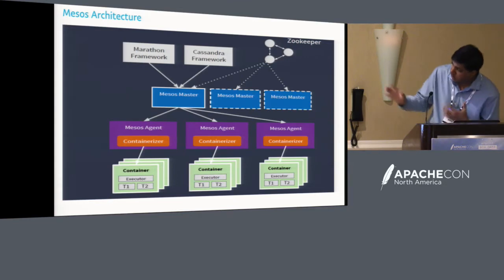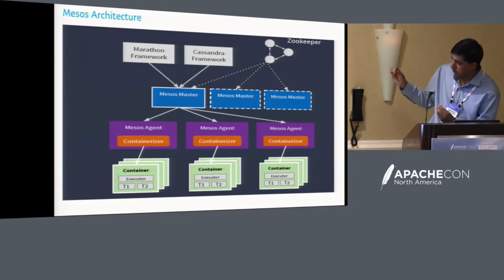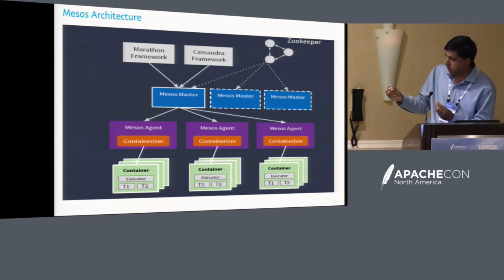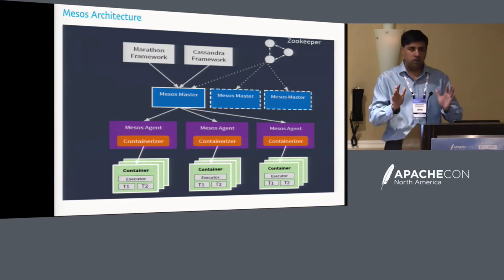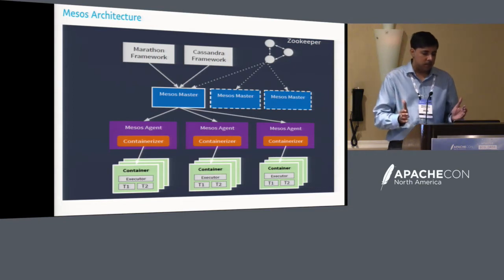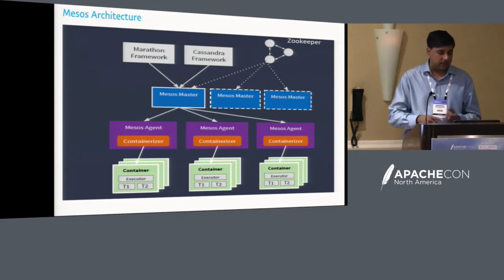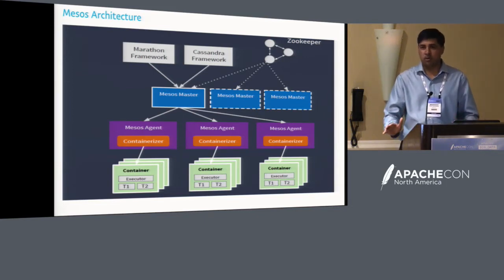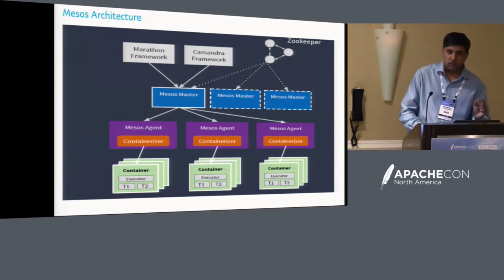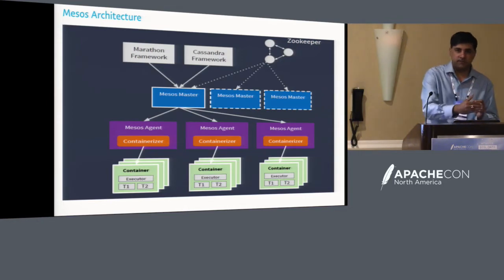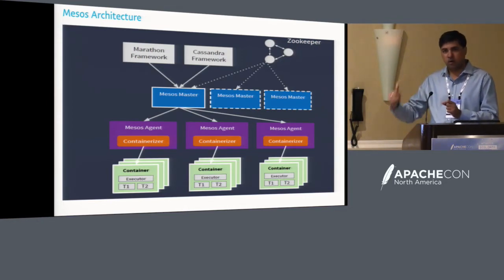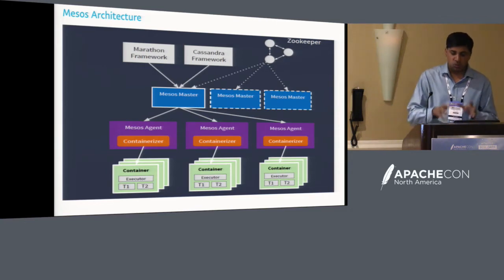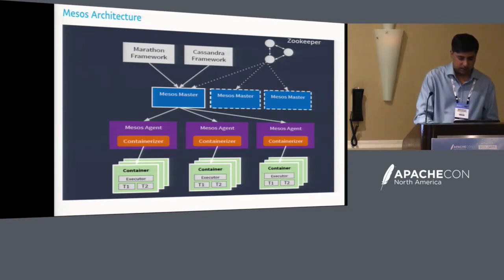In the whole Mesos ecosystem, the primitives are such that the frameworks, masters, and agents don't know what actual workload you're running. The executor is the one that implements the primitives and knows what workload is running and how to maintain its lifecycle. It's agnostic in that sense — different executors can coexist in the same host running different workloads.